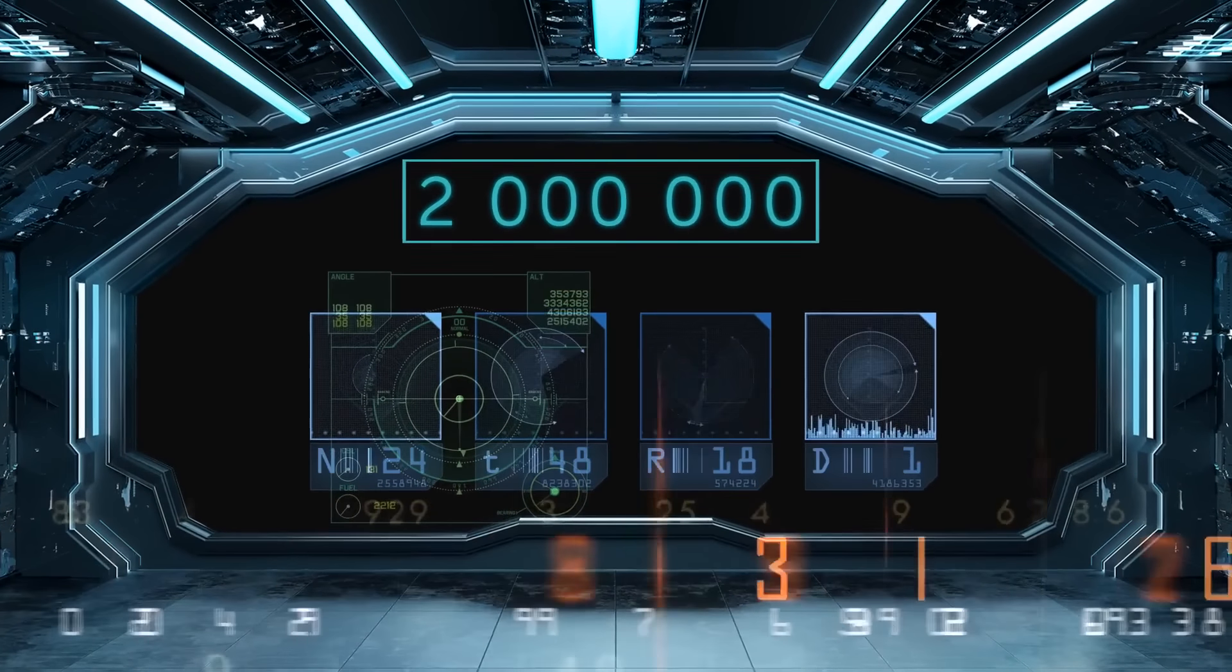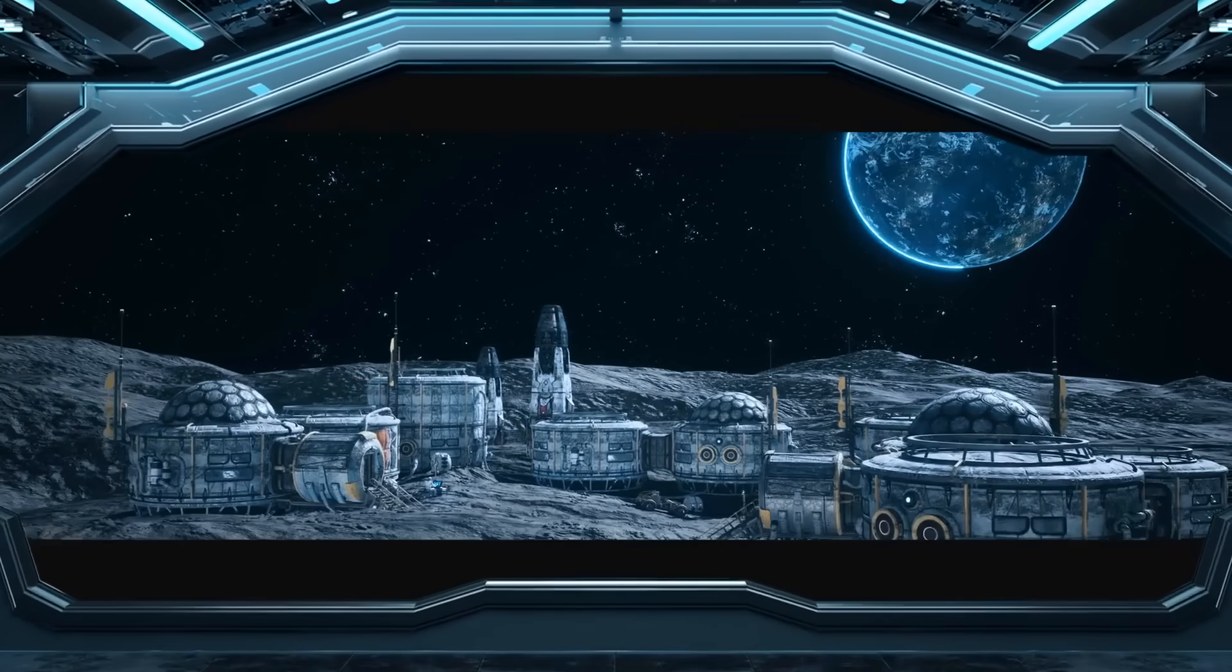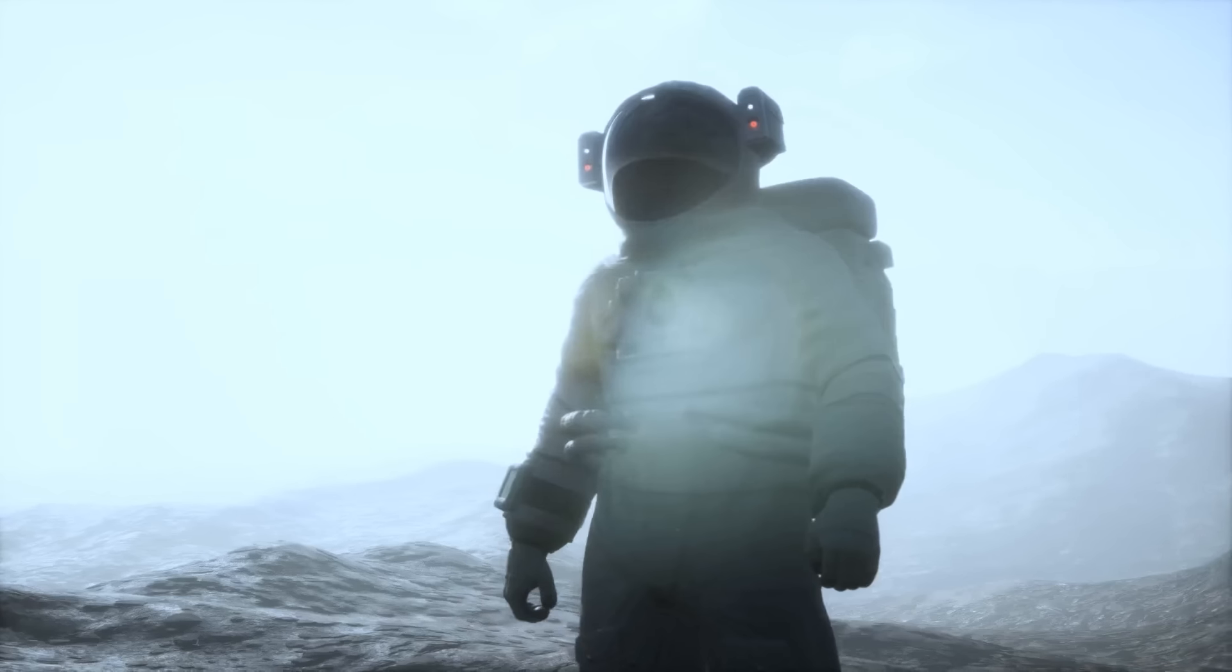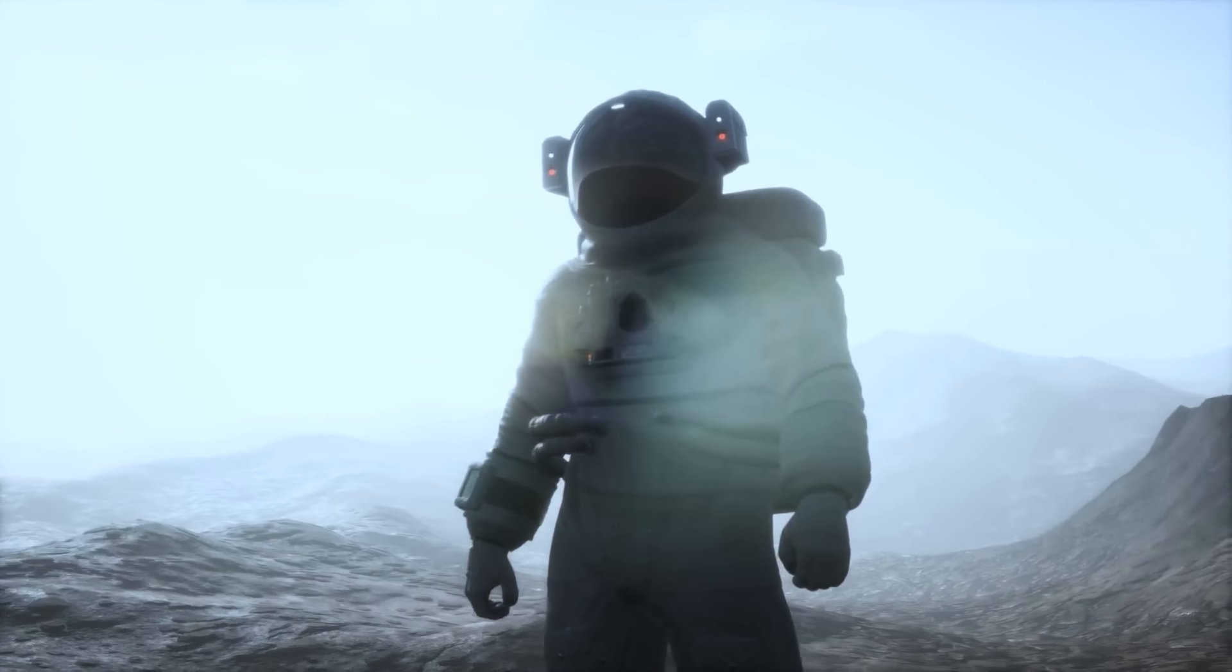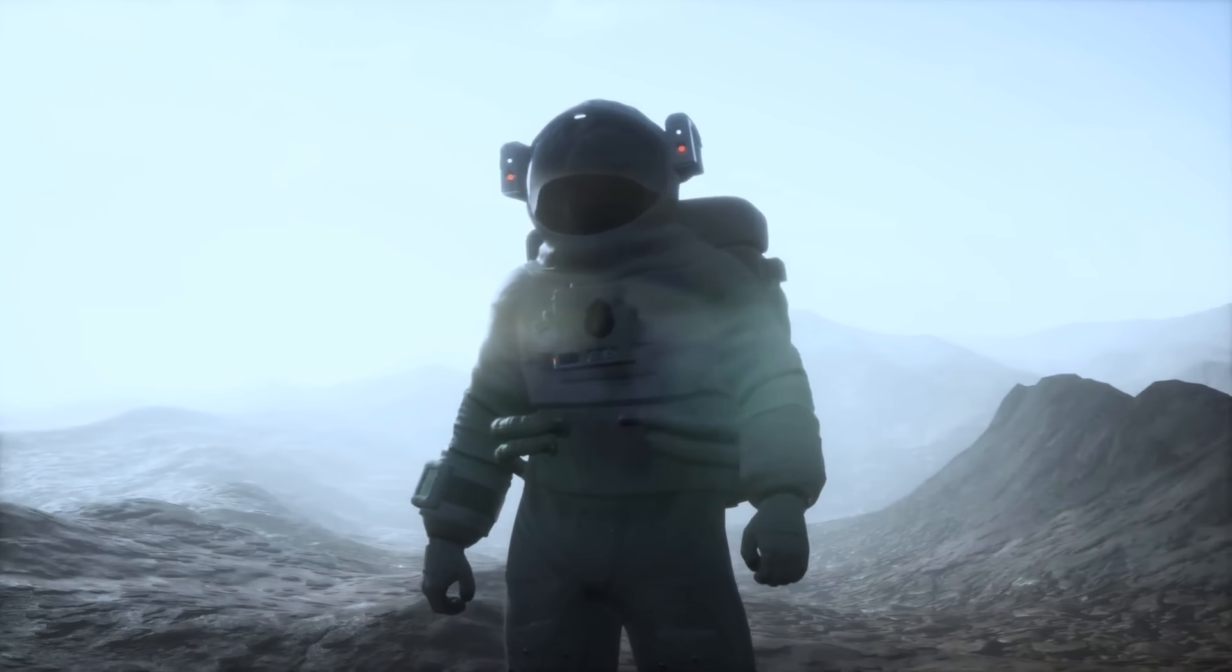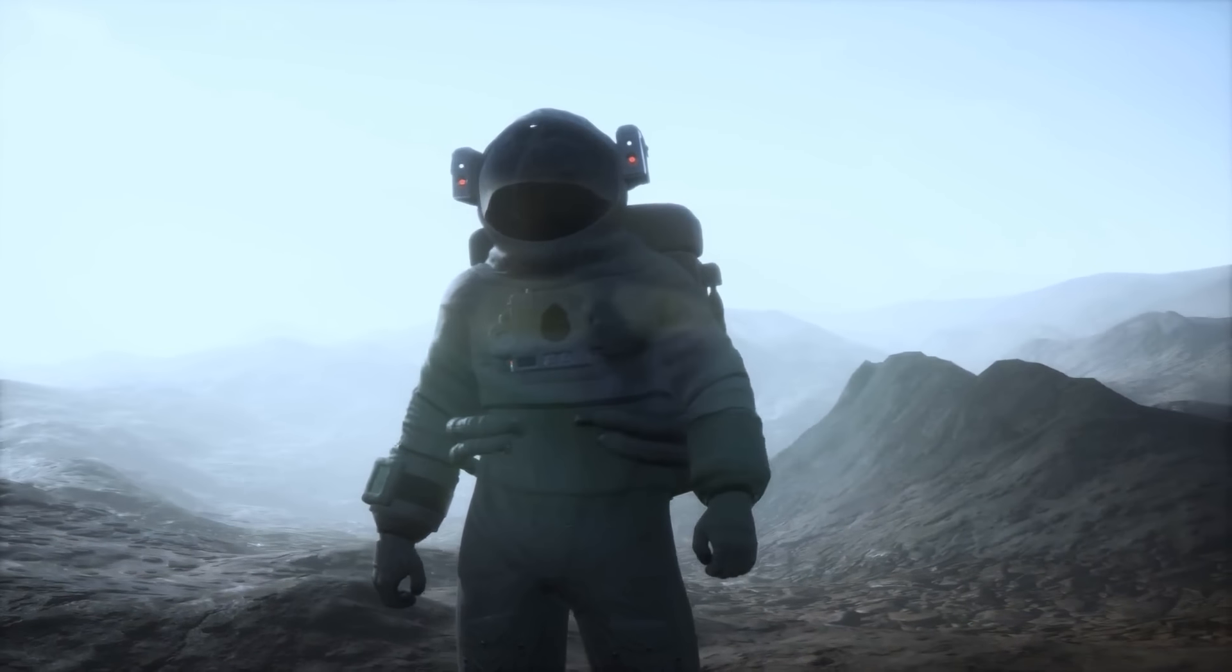Two million years into the future, and people have created settlements all over the solar system. Humans look different on different planets and moons since their bodies have adapted to particular conditions existing in those regions.